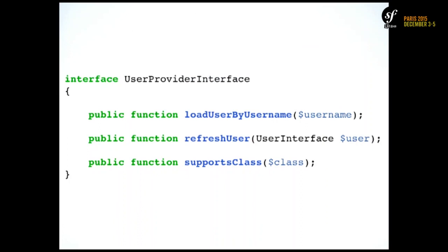If you want to implement your own provider, you just have to implement the interface with three methods. The first one is mandatory, as are the last three. refreshUser is called at every request — depending on what you want to do, you may update your user or throw an exception if unsupported, for instance when doing stateless REST API authentication where the user must be authenticated on every request. supportsClass just says which class of user you are managing.